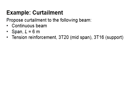Let us try another example for a continuous beam. Again, the span is 6m. The tension reinforcement is 3T20 at the mid-span and 3T16 at the support. You may pause the video for a while to work out the solution.